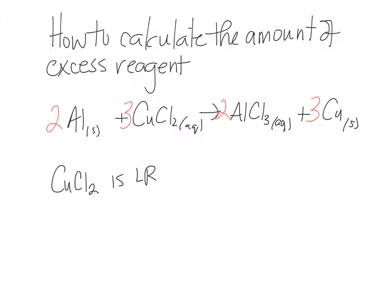Now that we know which one is limiting, we know which one is in excess. It has to be the other reagent. So aluminum is the excess reagent.